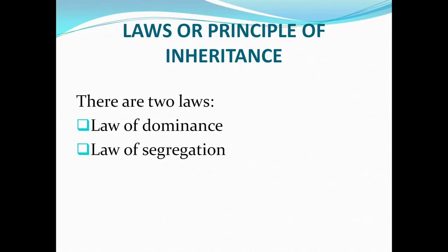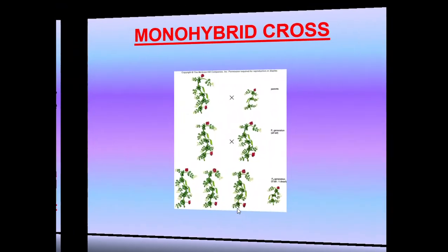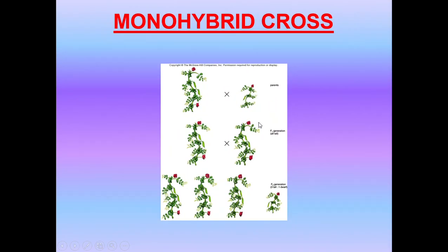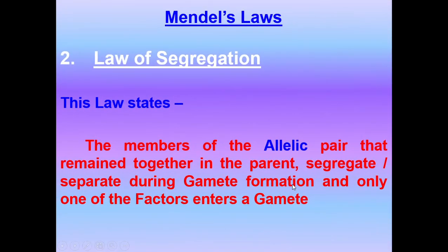Based on the monohybrid cross, Mendel deduced two laws: the Law of Dominance and the Law of Segregation. The Law of Dominance states that when two individuals of a species differing in a pair of contrasting forms of a trait are crossed, the form of the trait that appears in the F1 hybrid is dominant and the alternate form that remains hidden is recessive. In the case of tall and dwarf, the dwarf character is hidden — it is recessive — and it expresses in the F2 generation.